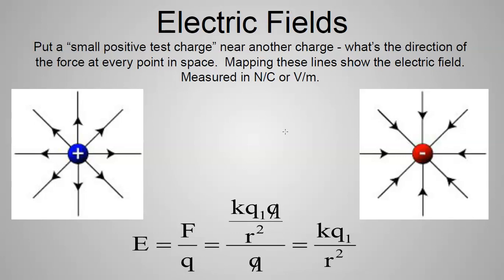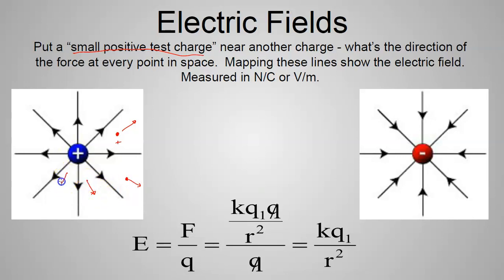An electric field works the same way: every point in space has a vector associated with it. For example, if I have a positive charge here and I put a small positive test charge nearby, it's going to be repelled. The direction is outward, and the magnitude depends on a calculation. Every point in space has a direction and magnitude — it points radially outward from a positive charge.